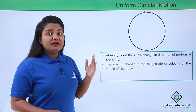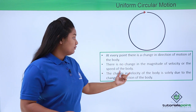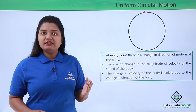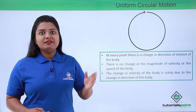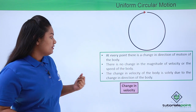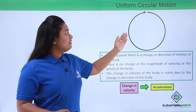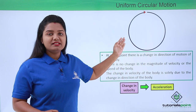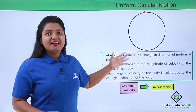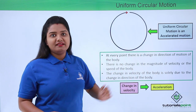Because of this change in direction throughout the circular path, there is a change in velocity at every point. We know that whenever there is a change in velocity, the body is said to be accelerating. Acceleration is the rate of change of velocity, so we can say that uniform circular motion is an accelerated motion.